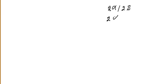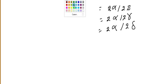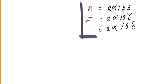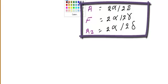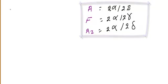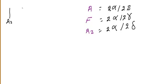Now let's discuss hemoglobin electrophoresis. The main hemoglobin types are: hemoglobin A (2 alpha, 2 beta), hemoglobin F (2 alpha, 2 gamma), and hemoglobin A2 (2 alpha, 2 delta). In a normal electrophoresis, hemoglobin A is around 97%, hemoglobin F is around 1%, and hemoglobin A2 is around 2%.